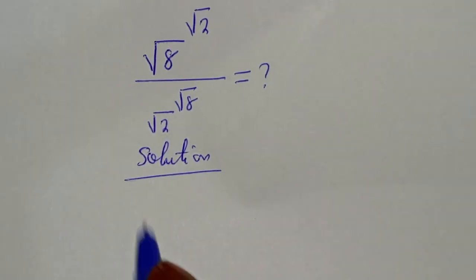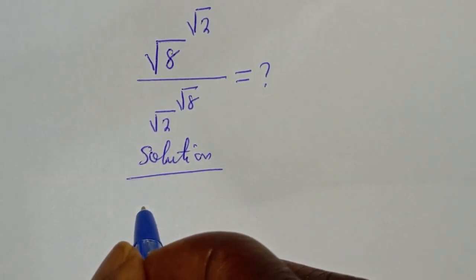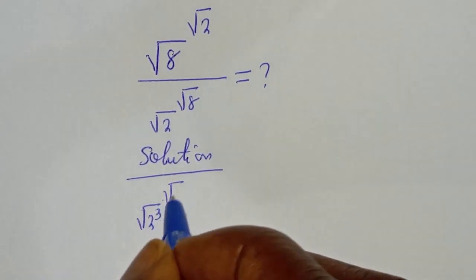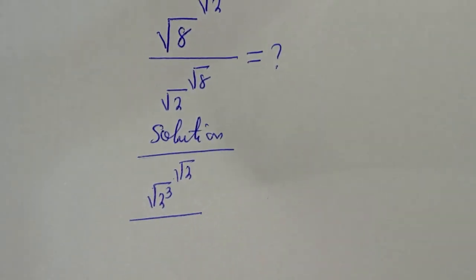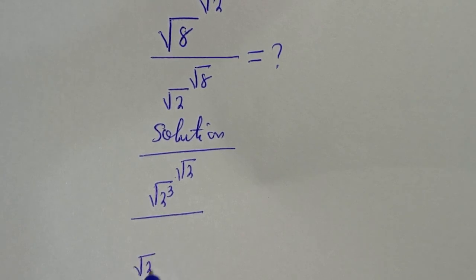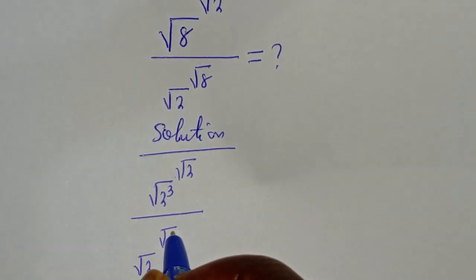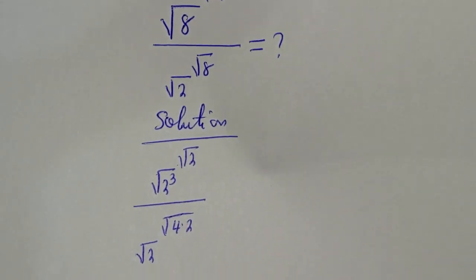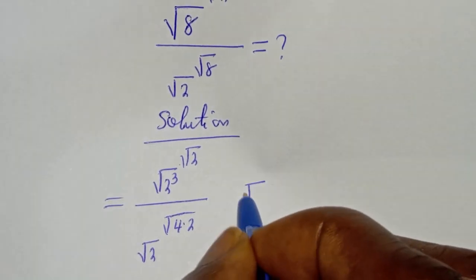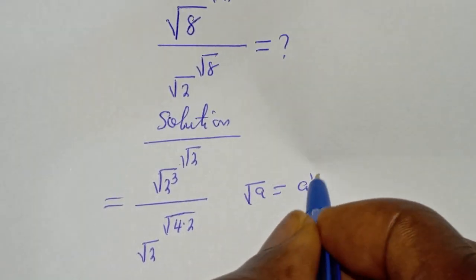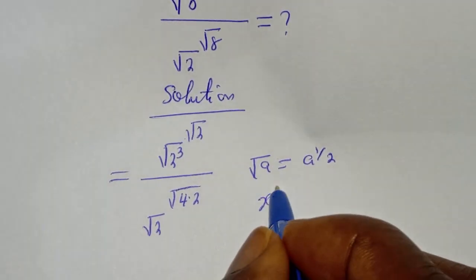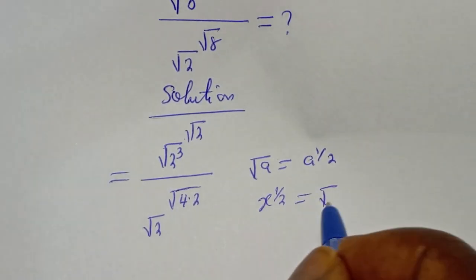Square root of 8 can be written as square root of 2 raised to the power 3, to the power of square root of 2, divided by square root of 2 to the power of square root of 8, which is 4 multiplied by 2. Take note that square root of 8 equals a raised to power 1 over 2, and s raised to power 1 over 2 equals square root of x.